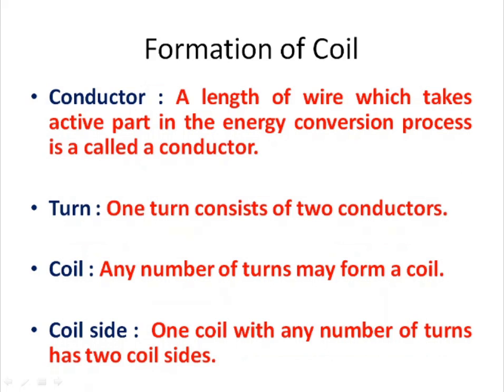Formation of coil. We know that the basic part of a winding is a coil. A coil is nothing but a length of wire that is shaped in a special way. A conductor is a length of wire which takes an active part in the energy conversion process.